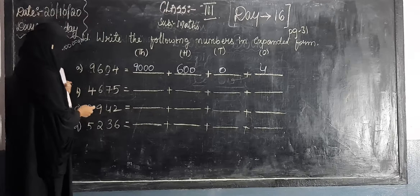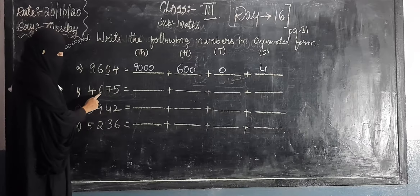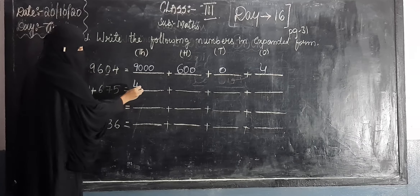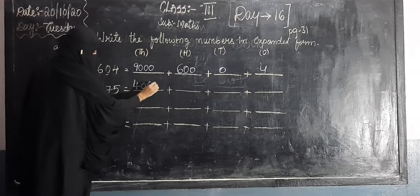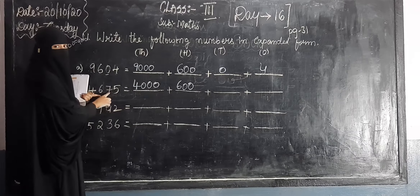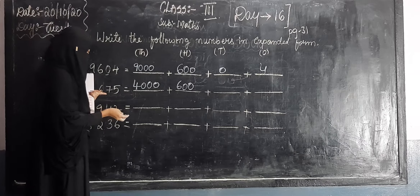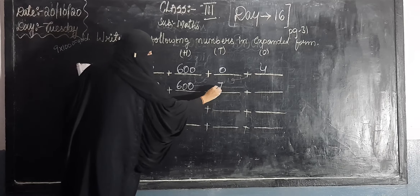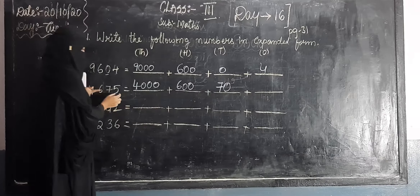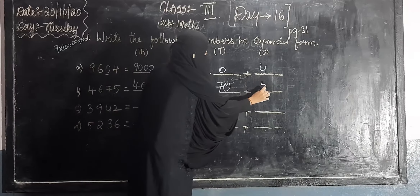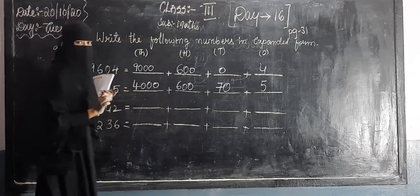Next question: four thousand, six hundred, seventy-five. So, we will separate here. Four into thousand — four thousand. Six into hundred — six hundred. Seven into ten — seventy, so that is 70. And the place value of 5 is ones, so we write 5. Answer: four thousand, six hundred, seventy, five.